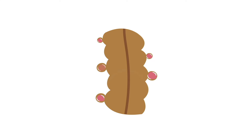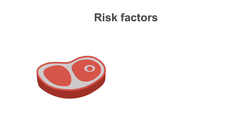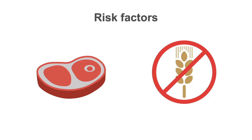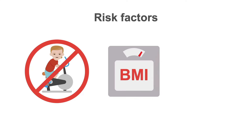The underlying cause of diverticulitis is micro or macroscopic perforation of a diverticulum. The primary process is thought to be erosion of the diverticular wall by increased intraluminal pressure or inspissated food particles. Inflammation and focal necrosis ensue, resulting in perforation. High dietary intake of red meat, low dietary fiber, lack of vigorous exercise, high BMI greater than 25, and smoking were all independently associated with an increased risk of diverticulitis.